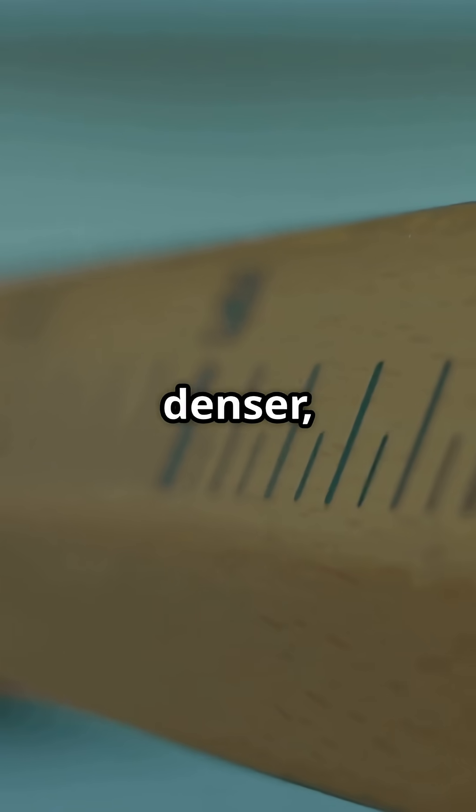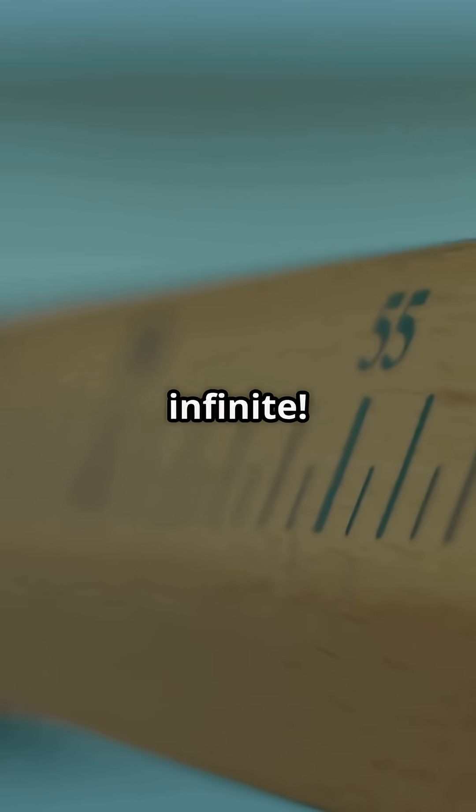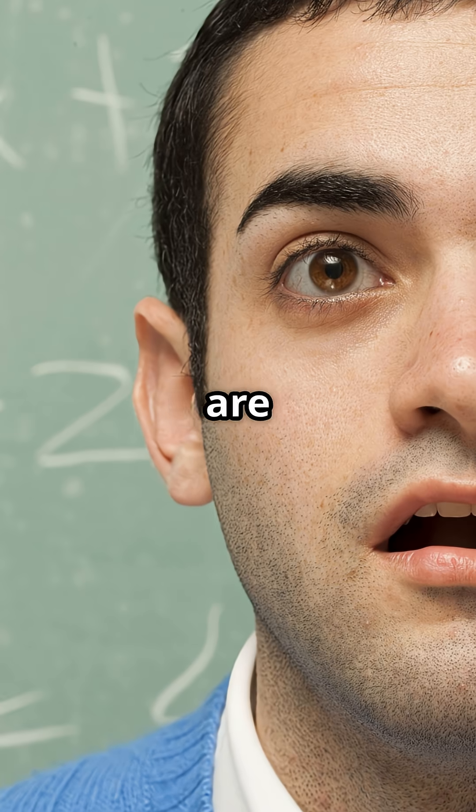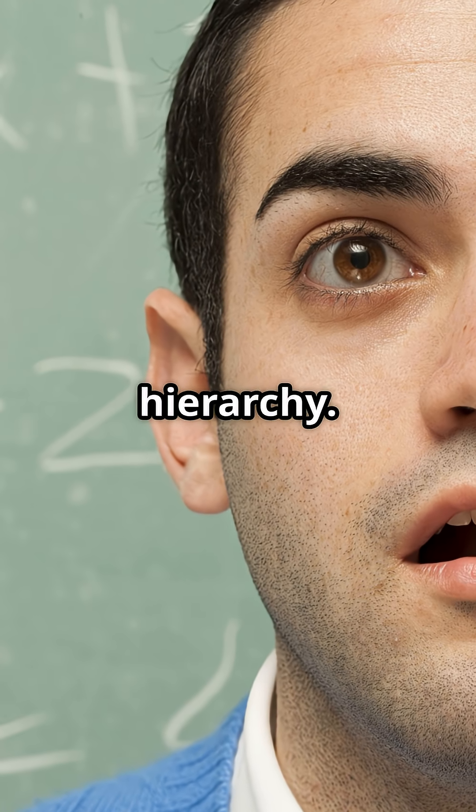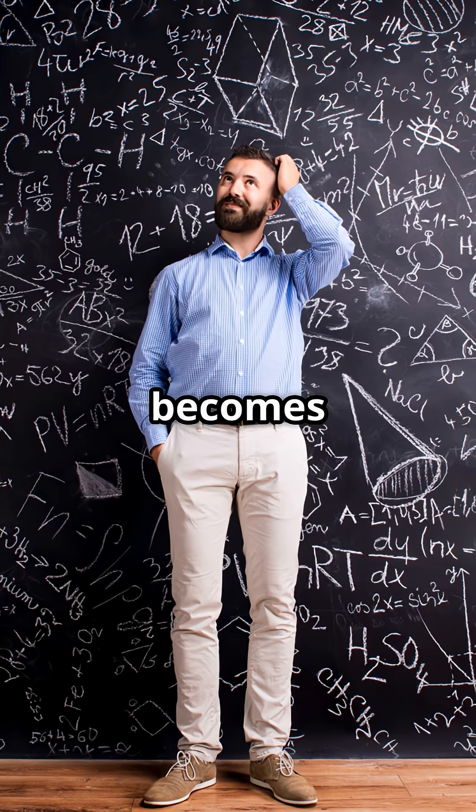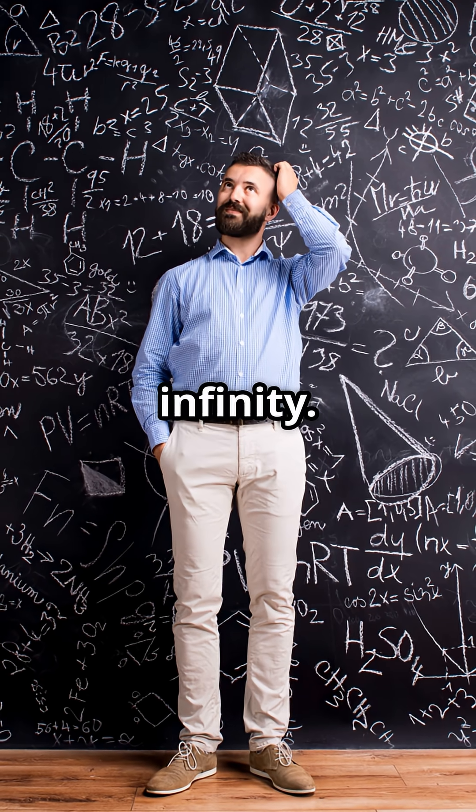This means the infinity of real numbers is denser, richer, more infinite. Not all infinities are equal. Cantor's genius revealed that even infinity has structure and hierarchy. It's a world where paradox becomes mathematical truth, and where infinity can surpass infinity.